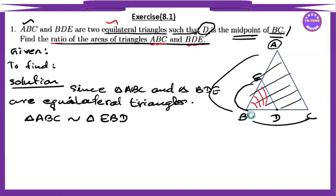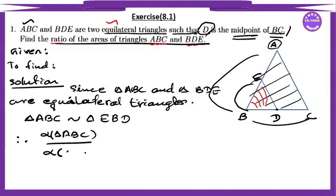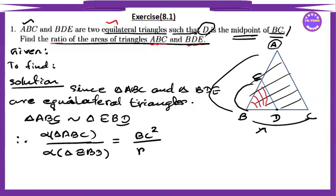So the area of triangle ABC over the area of triangle EBD equals BC squared over BD squared. You know BC and BD, so BC squared over BD squared gives us the ratio. Since D is the midpoint of BC, we know BD and DC are equal, so BC equals BD plus DC.